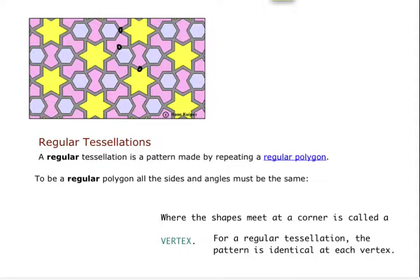For a regular tessellation, the pattern has identical vertices. So if you look, it's a repeated pattern and the vertices are always at the same location of the shape.